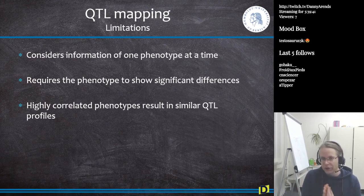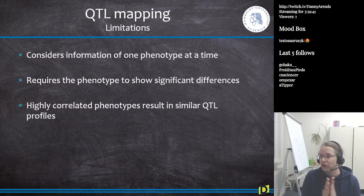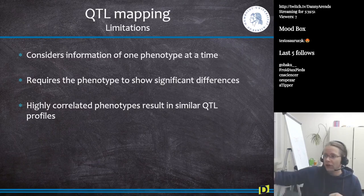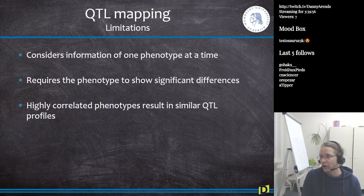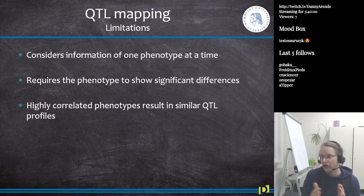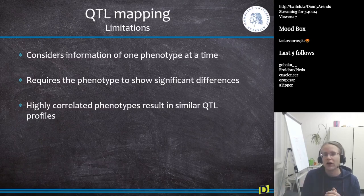One of the other big drawbacks in QTL mapping — and we didn't talk about this before — is that when you have two phenotypes which are very highly linked to each other, like the length of your arm versus the length of yourself, then they result in very similar QTL profiles, because the phenotype vectors are highly correlated to each other. Because the longer you are, the longer your arms are. The LOD scores that come up will be very similar.